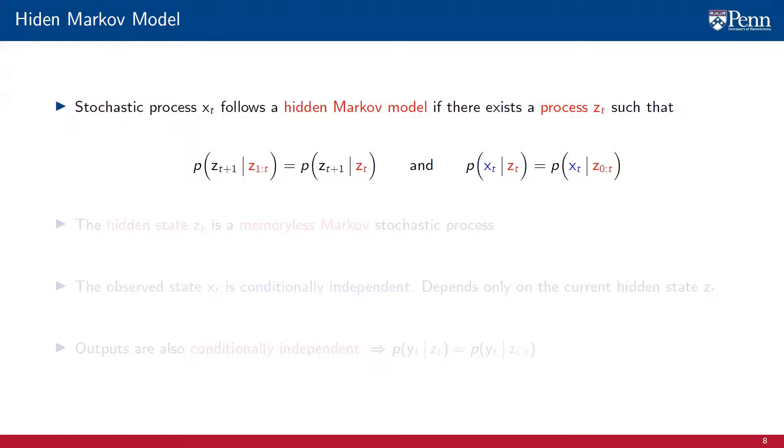The new part of the definition is to add the condition that the probability distribution of the observed state x of t given the current value of the hidden state z of t is equal to the probability distribution of x of t given the entire history of the hidden process.